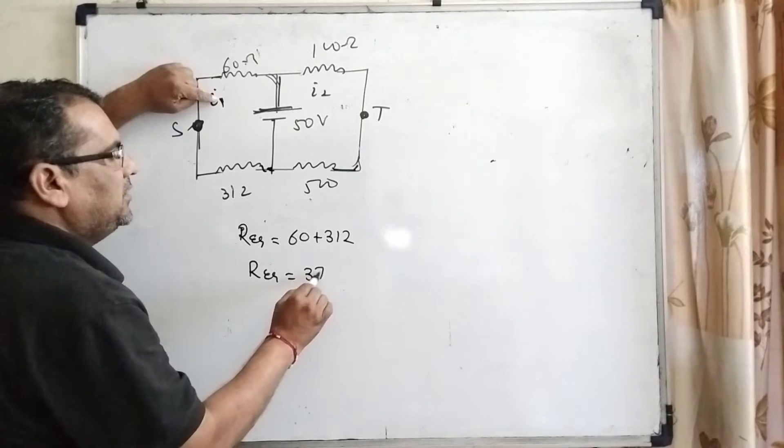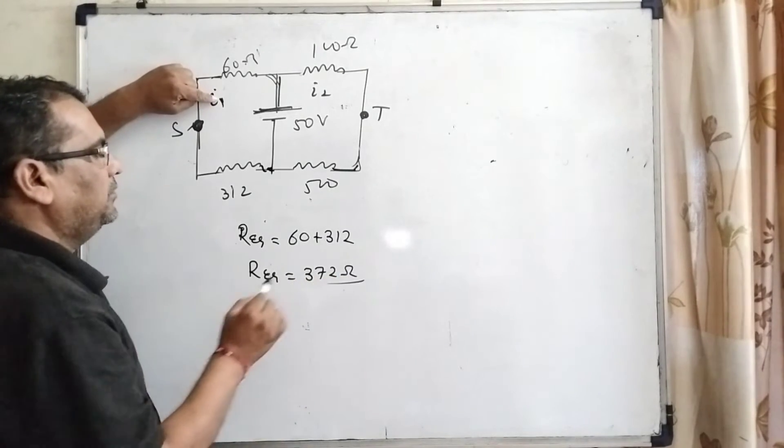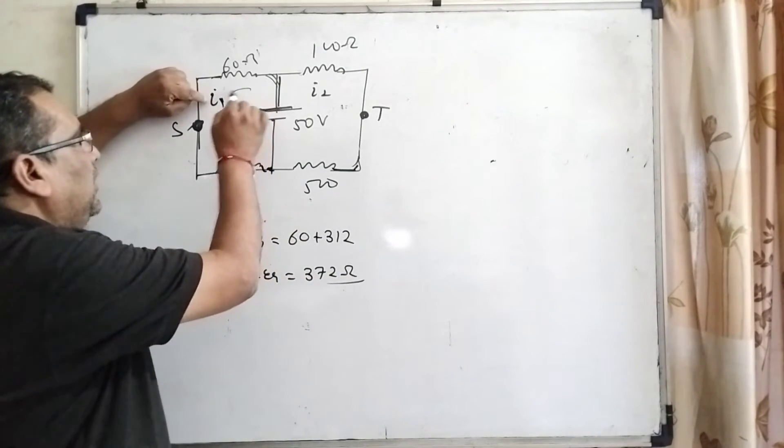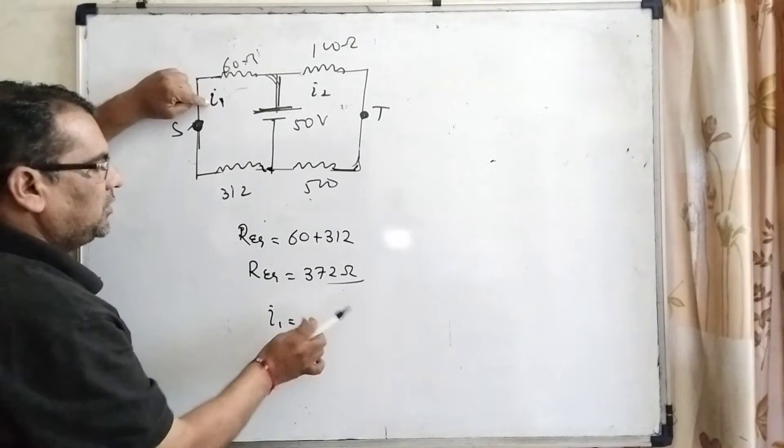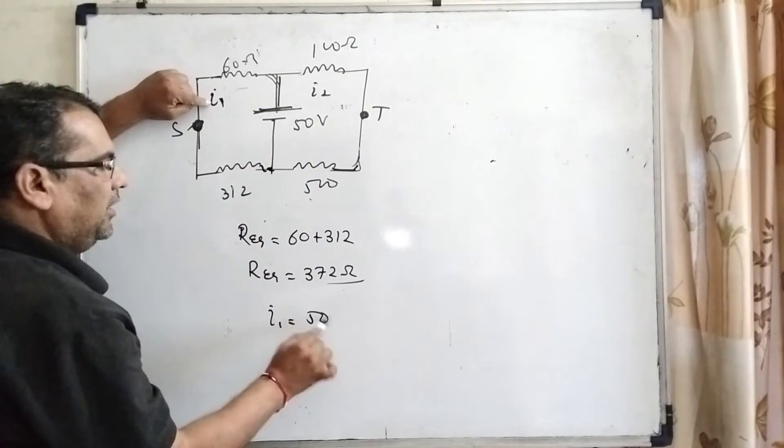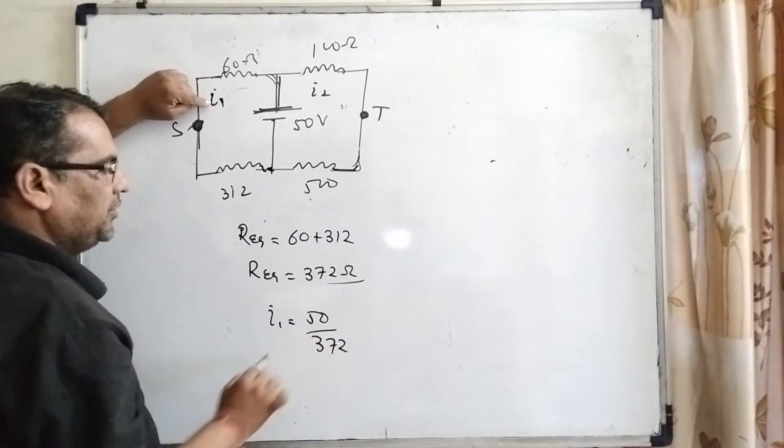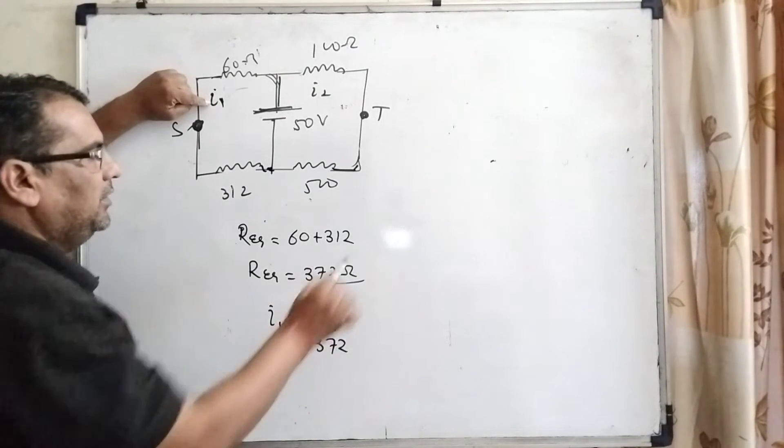And therefore, let the current flowing be I1. Then I1 is the net potential 50 divided by 372. This is I1.